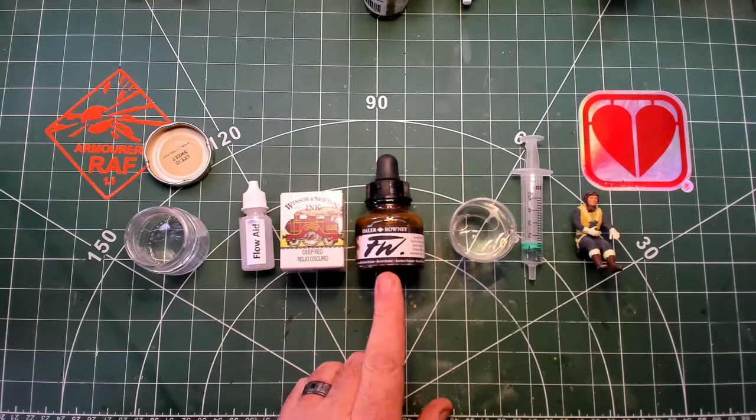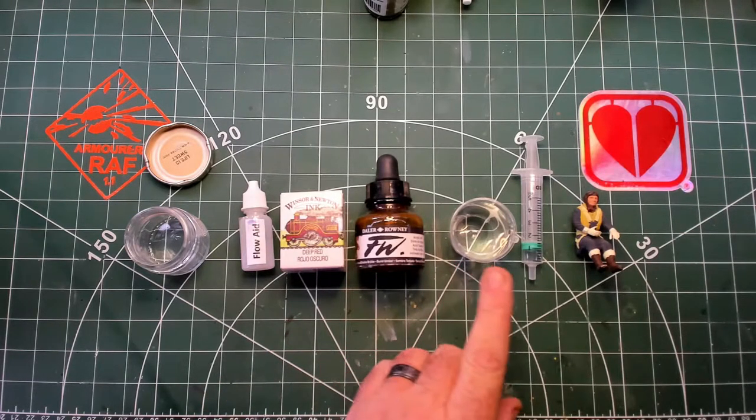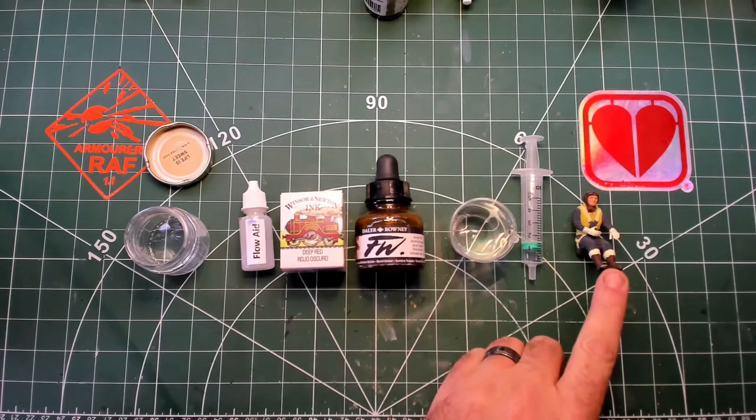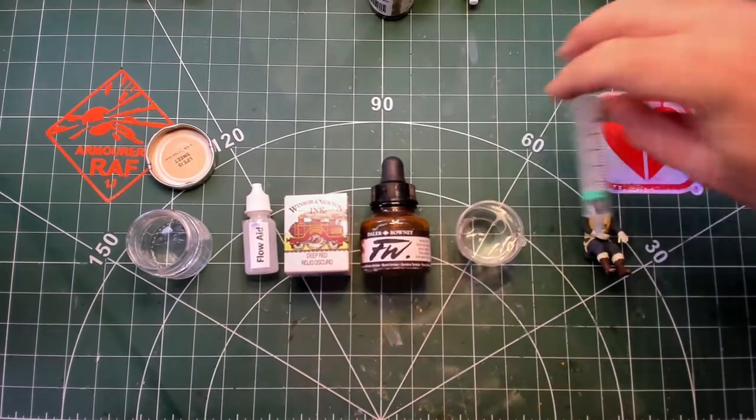You'll also need burnt umber ink, distilled water, a measuring device for fluids, and I've got a test piece here so I can show you what it looks like.